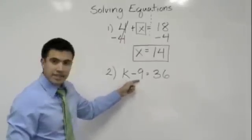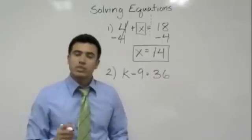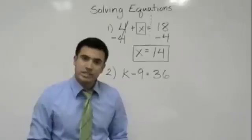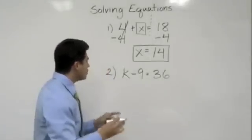We have k minus 9 is equal to 36. Let's see. What did I tell you guys? What's the main word that we have to remember when solving equations? Opposite, right? Yes, you got it, right? So, we have to do the opposite.